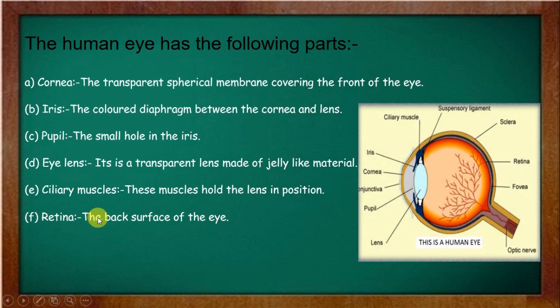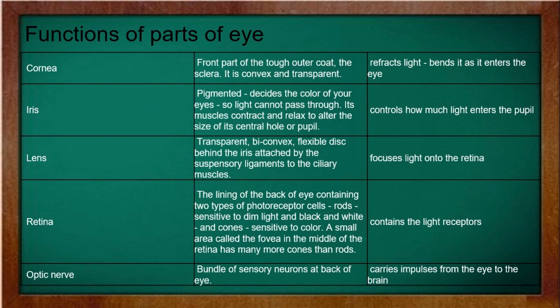The retina is the back surface of the eye where the image is formed when light falls on it. Now we will see the functions. The cornea's function is that it refracts and bends light as it enters the eye — it acts as a refractive medium that bends parallel light rays.